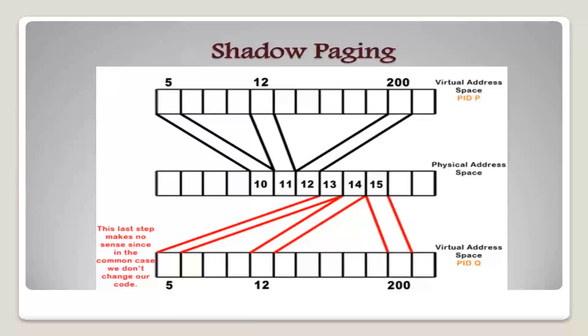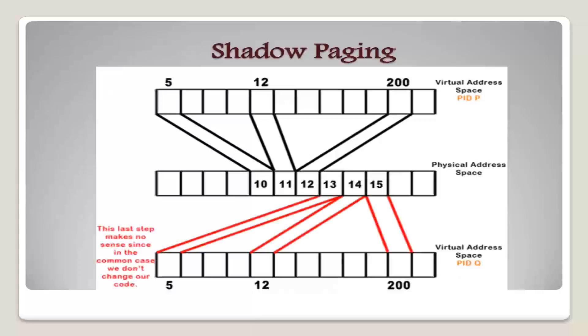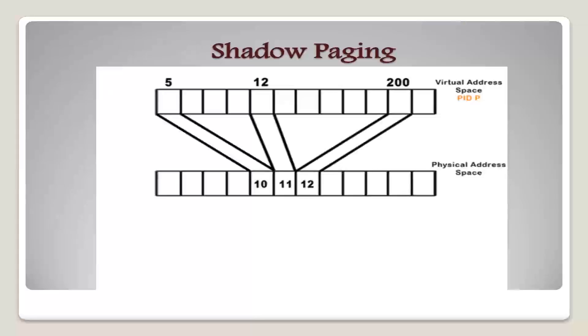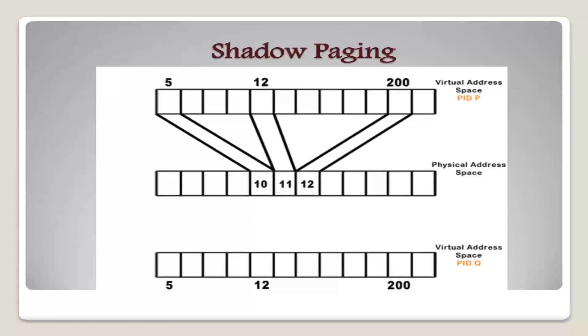The main idea behind shadow paging is to maintain two page tables during the lifetime of a transaction: the current page table and the shadow page table. It stores the shadow page table in non-volatile storage such that the state of the database prior to transaction execution may be recovered. The shadow page table is never modified during execution. To start with, both the page tables are identical. Only current page table is used for data item accesses during execution of the transaction.